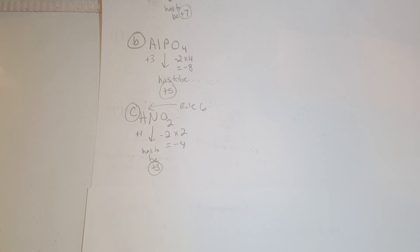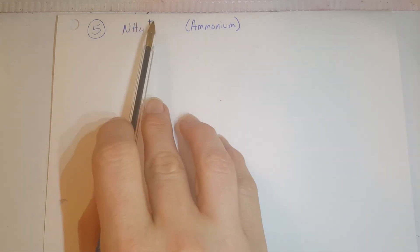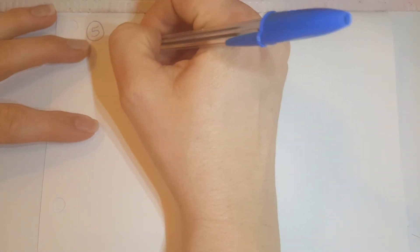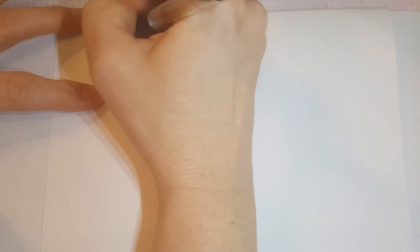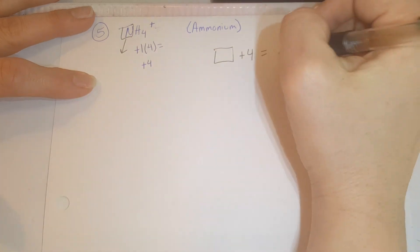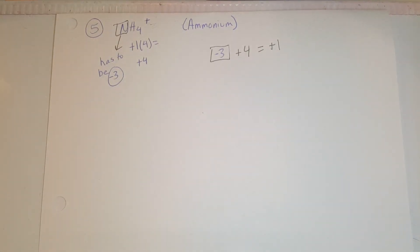Number five is the same thing but for ions instead of neutral molecules. Number five part A is NH4+, which has a charge of positive one. Referring back to rule six, hydrogen in this case is positive one, and there are four of them, totaling positive four. Whatever the oxidation number of nitrogen is, plus four from hydrogen, needs to total the ion's overall charge of positive one. That means nitrogen has to be negative three.